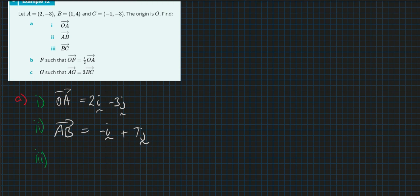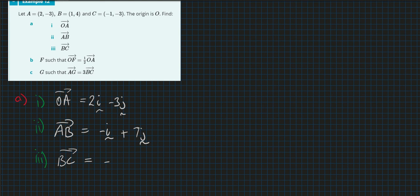B to C using the same principle: C minus B gives us the vector B to C. So minus one minus one is minus two I, and minus three minus four is minus seven J. So B to C equals minus two I minus seven J.